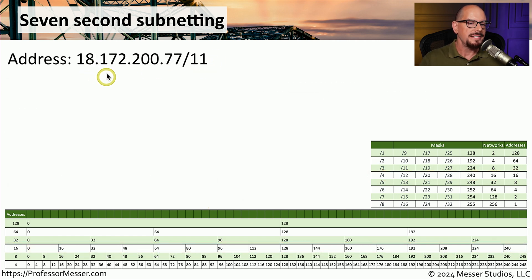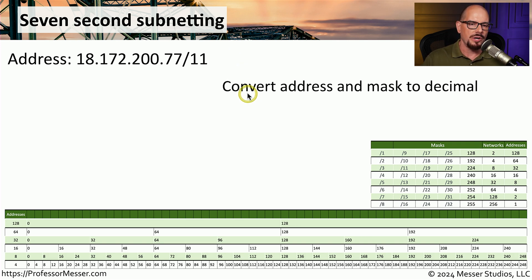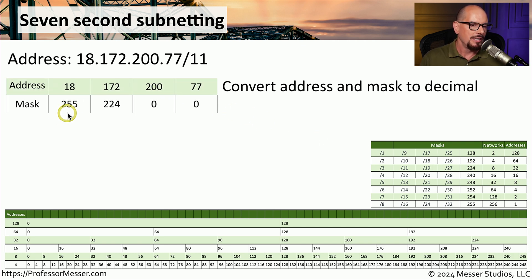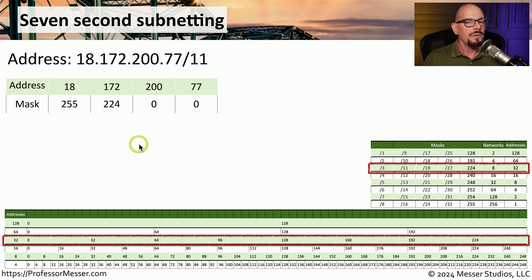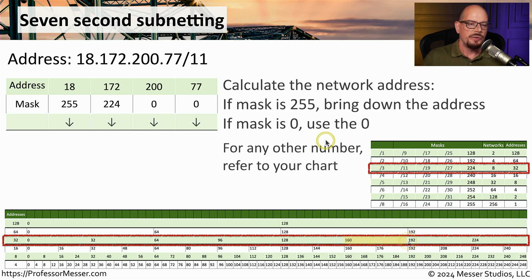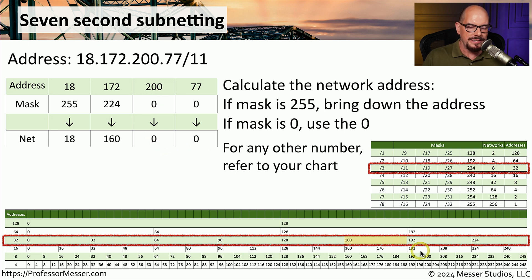Let's go through the process again with 18.172.200.77/11. The first thing is to convert slash 11 to a decimal mask. Looking at our chart, slash 11 is in the second octet with a value of 224, so our subnet mask is 255.224.0.0. On the same line, we can see there are 32 addresses per subnet. Since slash 11 is in the second octet, we look at where 172 fits in blocks of 32 — it fits in the range between 160 and 191. Since the block starts with 160, our network address is 18.160.0.0.